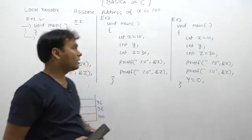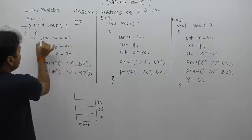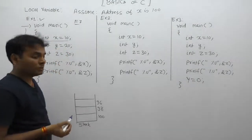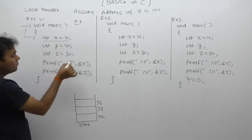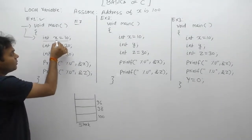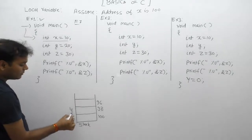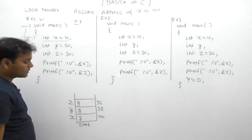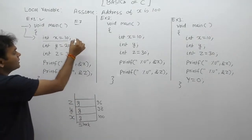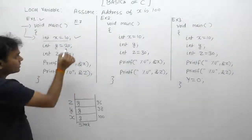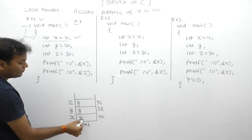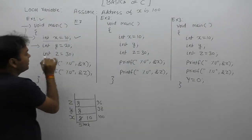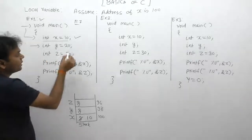When execution control comes inside the block, all local variables are created inside the stack at once, according to declaration order. First we declare variable x, next we declare variable y, then variable z. The initial value of all local variables is garbage. After that, x is initialized to 10 — the garbage value is replaced by 10. Control moves to the next statement.